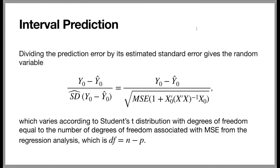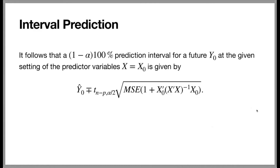Dividing the prediction error by its estimated standard error gives the random variable where y sub 0 minus y hat sub 0 is on the numerator divided by its estimated standard error. This random quantity varies according to Student's t distribution with degrees of freedom equal to the degrees of freedom associated with the MSE from the regression analysis, which we know to be N minus p. Based on this result, a 1 minus alpha times 100 percent prediction interval for a future observation y sub 0 at a given setting of the predicted variables x sub 0 is given by this formula.